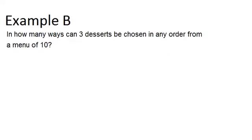Example B says: in how many ways can 3 desserts be chosen in any order from a menu of 10? So we have 10 desserts to choose from and we're choosing 3 from those 10. The order doesn't matter — we're just going to choose 3 to have and eat.